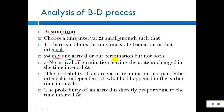In the time interval delta, only one arrival or one termination may be possible, but not both. So only one arrival of a call or termination may occur — both cannot happen simultaneously. The probability of an arrival or termination in a particular interval is independent of what happened in the earlier time interval.